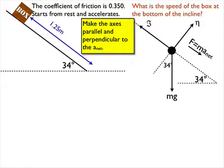Whatever direction M A net is traveling, I'm always going to make that the positive direction. So perpendicular to M A net, that's going to be Mg cosine 34. And parallel, it's going to be Mg sine 34.